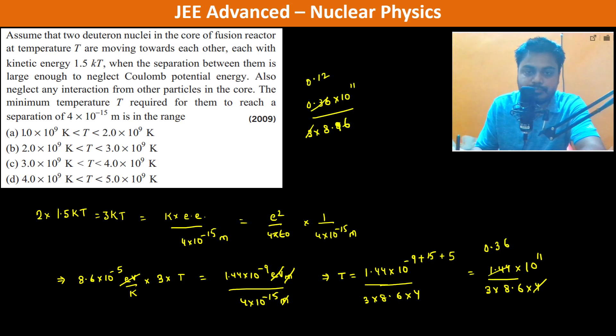So 120 divided by 8.6×10^8. Now 8.6 divided by, so 10 by 9, so 120 divided by 8 is 6. It is 10^9 Kelvin. So this is the answer, so the part A becomes the answer.